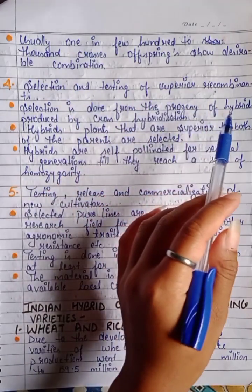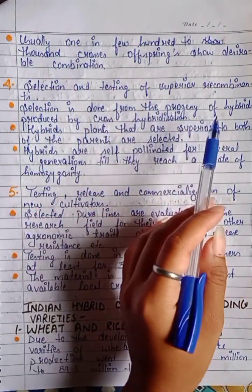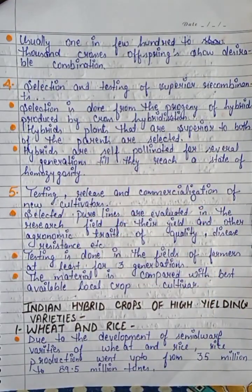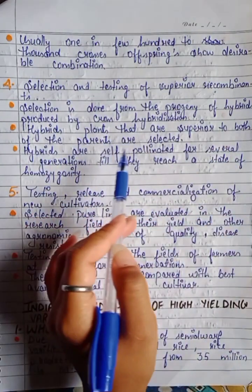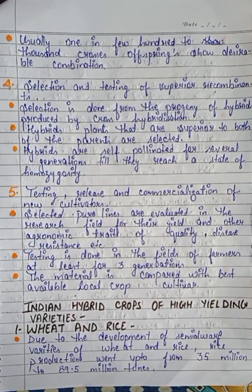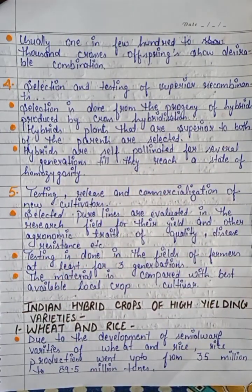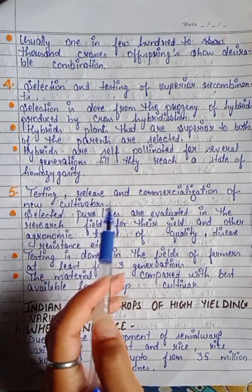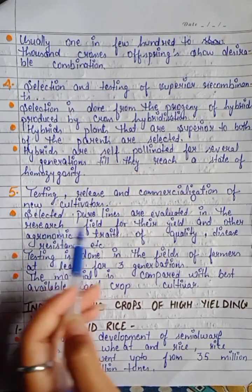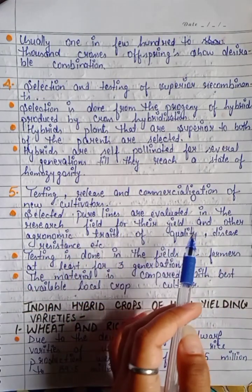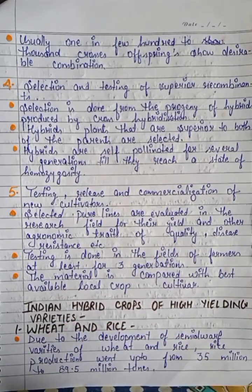The fourth step is selection and testing of superior recombinants. Selection is done from the progeny of hybrids produced by cross hybridization. Hybrid plants superior to both parents are selected and self-pollinated for several generations until they reach homozygosity. The fifth step is testing, release, and commercialization of new cultivars. Selected pure lines are evaluated in research fields for yield and other agronomical traits — quality, disease resistance, etc. Testing is done in a farmer's field for at least three seasons or generations, and the material is compared with the best available local crop cultivar.